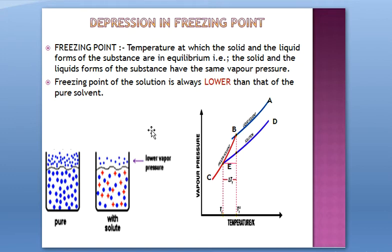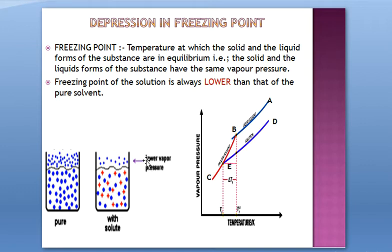Why? Because everything depends on vapor pressure. The solution's vapor pressure is lower, and consequently that affects its freezing point. The pure solvent has a certain vapor pressure; when we add solute, the vapor pressure decreases. Since freezing is the temperature at which the vapor pressure of the solid and liquid phases become equal, and this solution's vapor pressure is already lower, its freezing will occur at a lower temperature. For example, if the solvent freezes at minus 10°C, the solution of that same solvent might freeze at minus 21°C or lower.